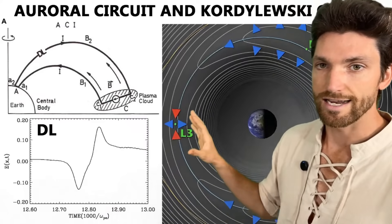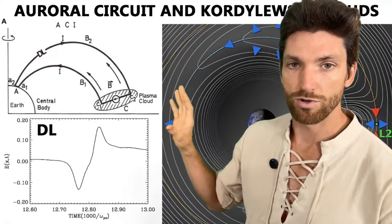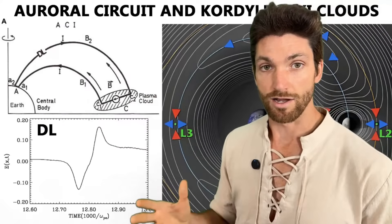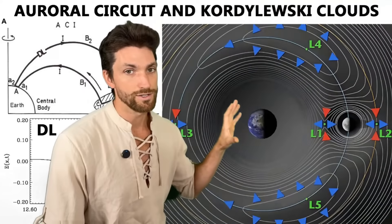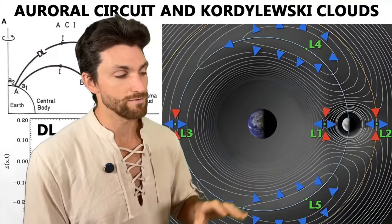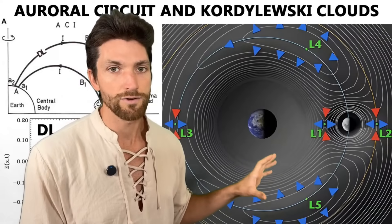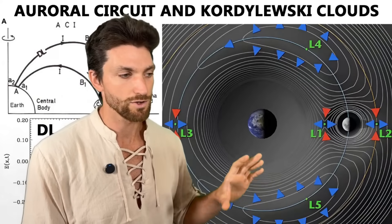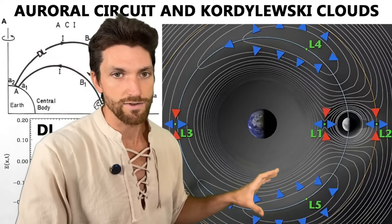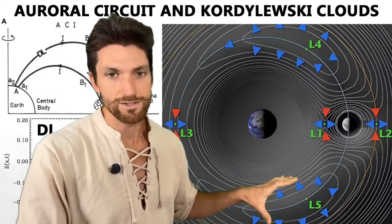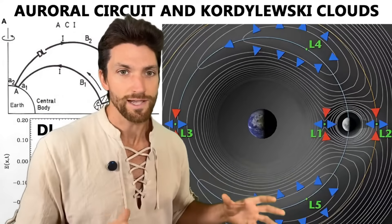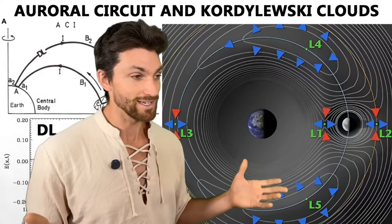So interesting side note I wanted to bring up about Kordylewski clouds and the auroral circuit and how they may be connected together. We really don't know that much about these. There's some very interesting ideas floating around as it relates to the Kordylewski clouds. You can read about that in A New Science of Heaven by Robert Temple. He speculates that these are highly conscious plasma entities. So you can look into that if you want.